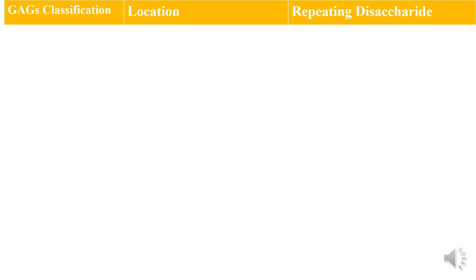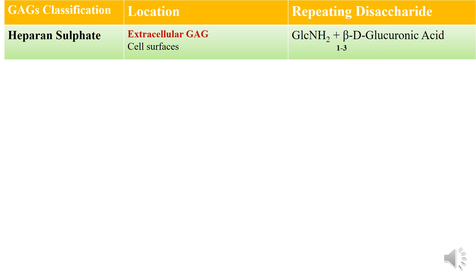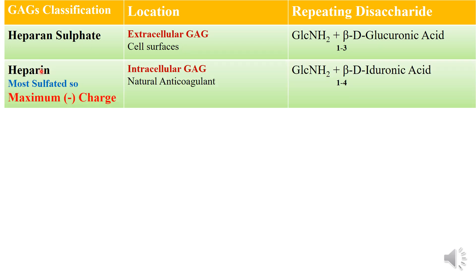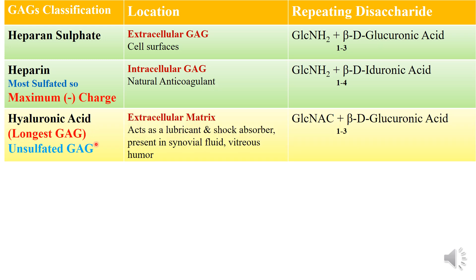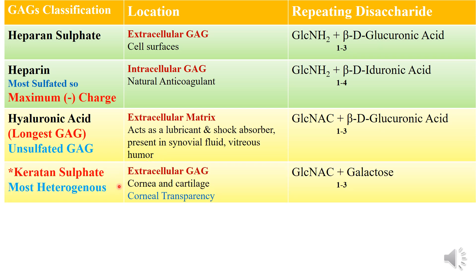Looking at the classification and location of different GAGs: heparin sulfate is an extracellular GAG found on cell surfaces. Heparin is the most sulfated GAG with maximum negative charge and the only intracellular GAG; it is also a natural anticoagulant. Hyaluronic acid is the longest and only unsulfated GAG, found in extracellular matrix as a lubricant and shock absorber in synovial fluid and vitreous humor. Keratan sulfate is the most heterogeneous GAG, containing other monosaccharides such as mannose and fucose; it is found in cornea and cartilage.